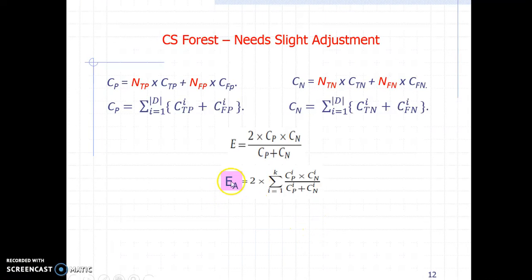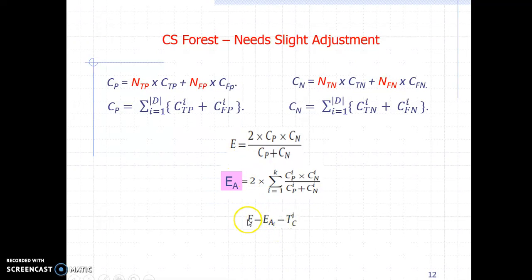We can also calculate the expected cost if attribute A were tested as the root attribute. Knowing these two expected costs, we can easily calculate the expected cost reduction. The attribute that gives the best reduction is chosen as the root attribute, and the same process continues at subsequent nodes to choose each node's split attribute.